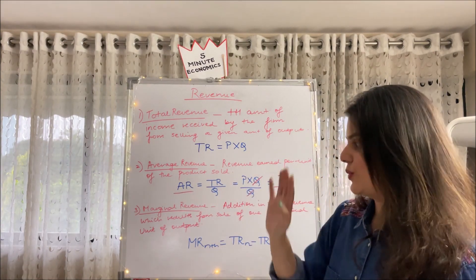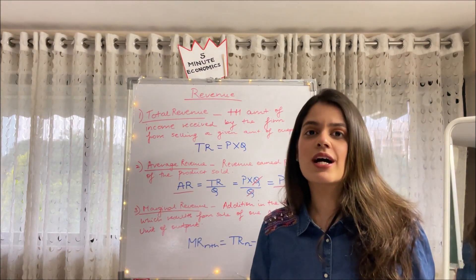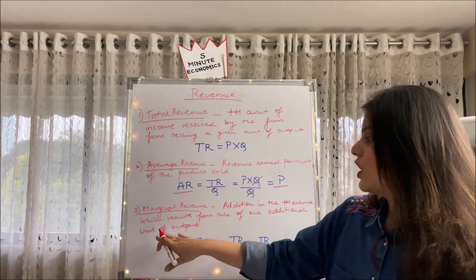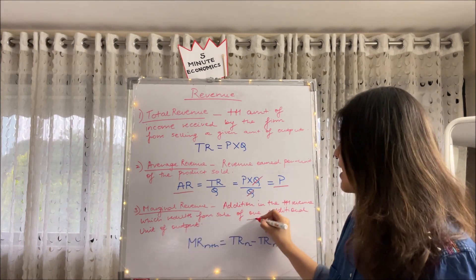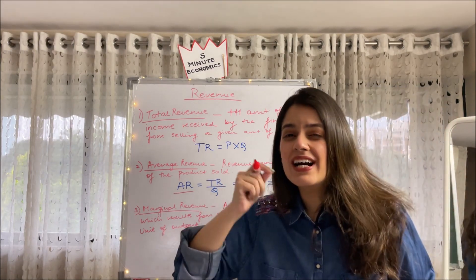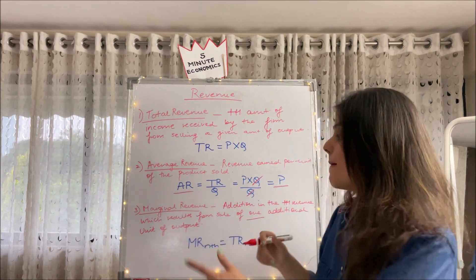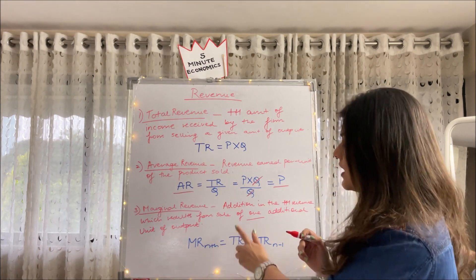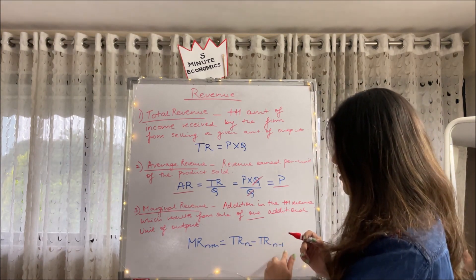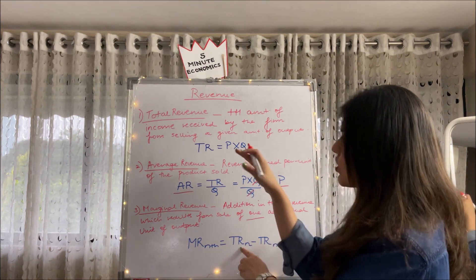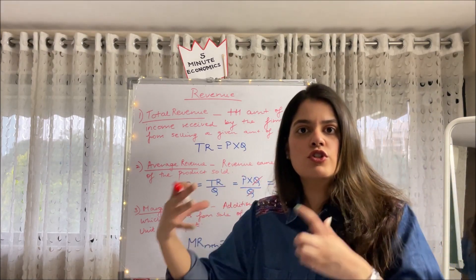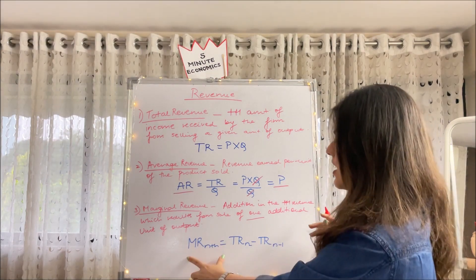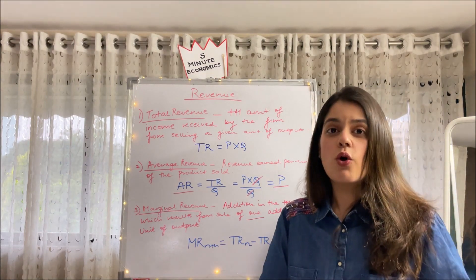Lastly, marginal revenue — whenever we say 'marginal' we mean additional. It is the addition to total revenue resulting from the sale of one additional unit. The formula is MR(n) = TR(n) − TR(n−1). So for example, total revenue of three units minus total revenue of two units gives us the marginal revenue of the third unit.